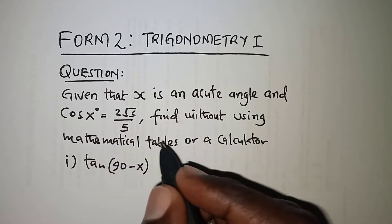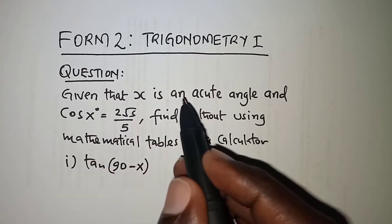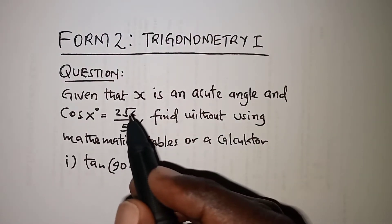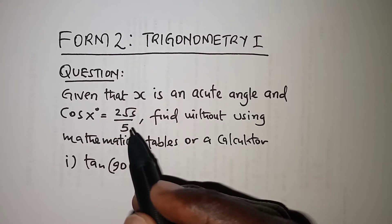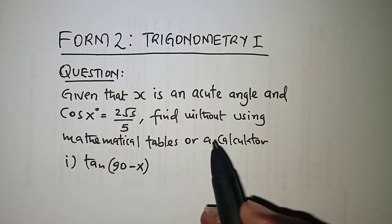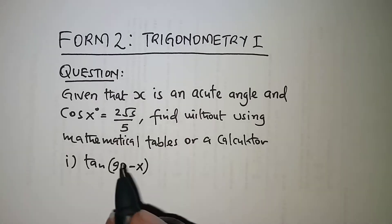The question we have reads, given that x is an acute angle and cosine of x is 2 root 5 all over 5, find without using mathematical tables or a calculator, tangent of 90 minus x for the first part of the equation.